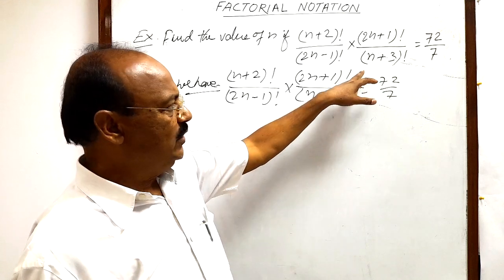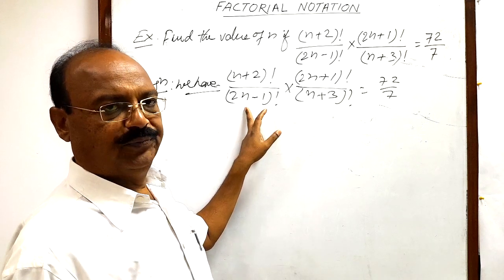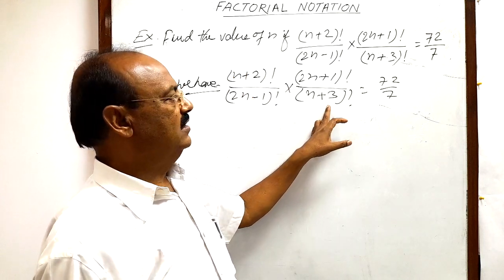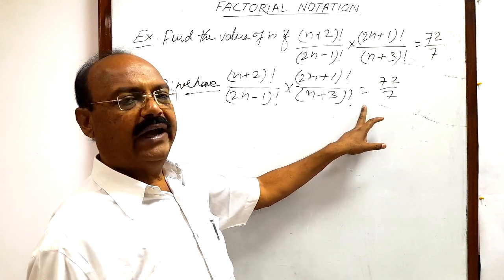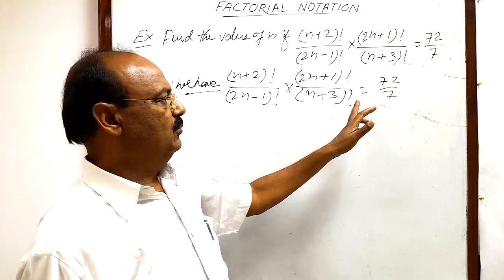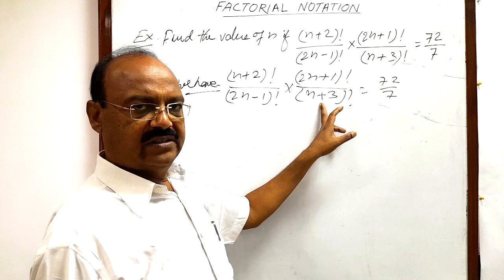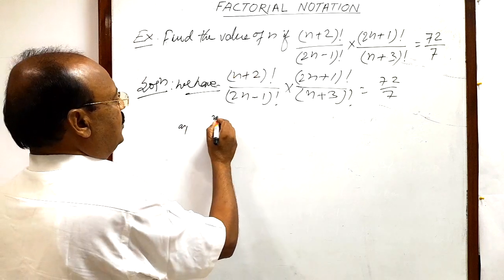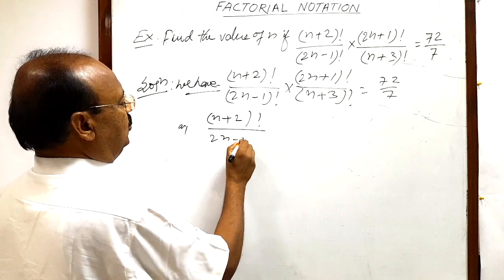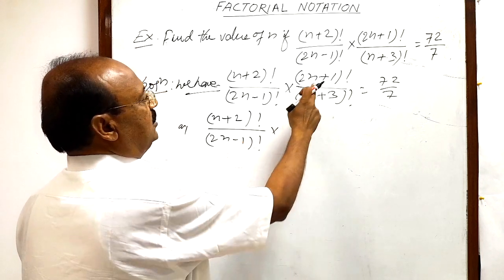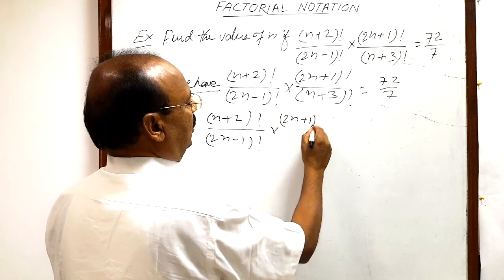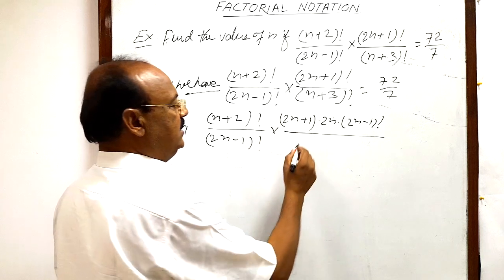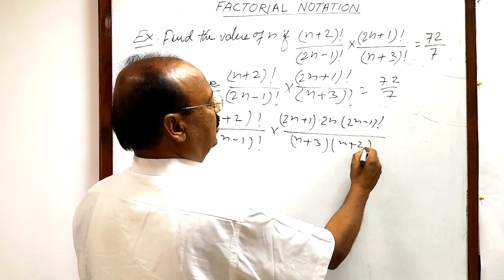If we write (2n+1)! as (2n+1) × 2n × (2n-1)!, then that (2n-1)! will be cancelled out. Similarly, we will keep (n+2)! as it is, but (n+3)! can be written as (n+3) × (n+2)!, because (n+2)! contains all the multiplications from 1, 2, 3, 4 up to (n+2), and multiplying by (n+3) gives (n+3)!.